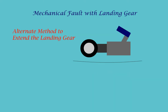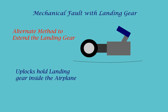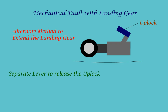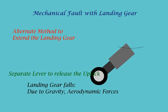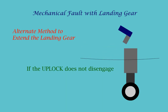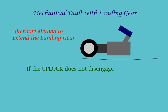Before looking at the alternate method to extend the landing gear, we need to understand how the landing gear is held inside the aircraft. There are uplocks that lock the landing gear inside the aircraft. A separate lever is usually provided to release the uplock and allows the landing gear to fall due to gravity and aerodynamic forces. If the uplock does not disengage, the alternate method of extension also fails.